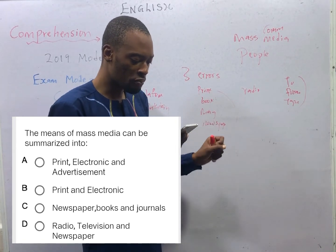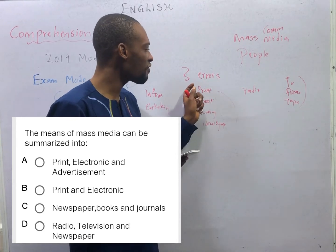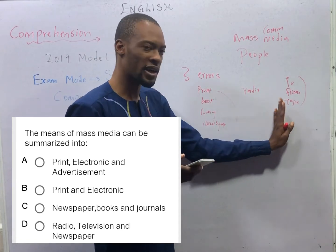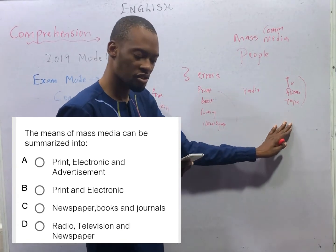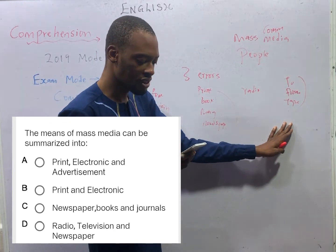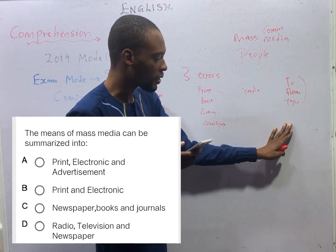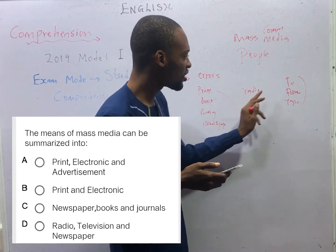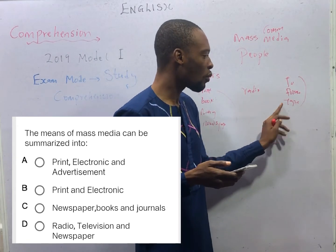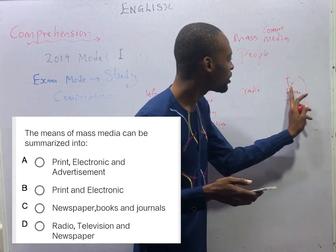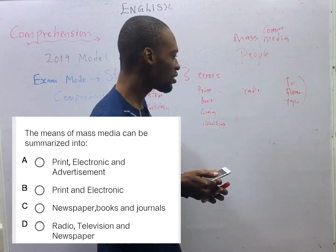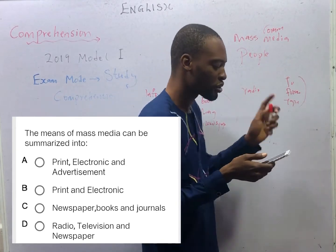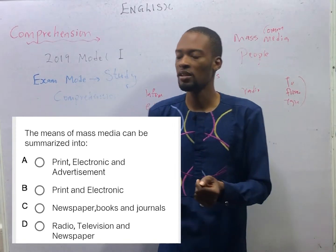Option C says newspaper, books and journals — everything here is classified as print, so what happens to the other parts mentioned? Option C is not sufficient. Option D says radio, television and newspaper. If you say radio and television, what happens to the video tape and the film? It means you are picking only those two. To get the best category, everything in print is a printed copy and everything else is electronic. So option B is the correct answer to the question.